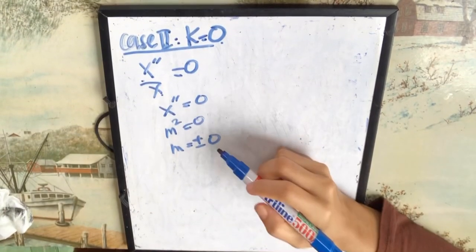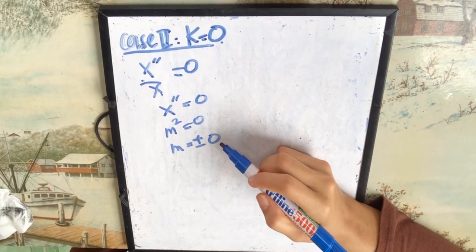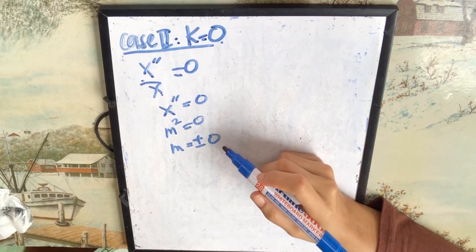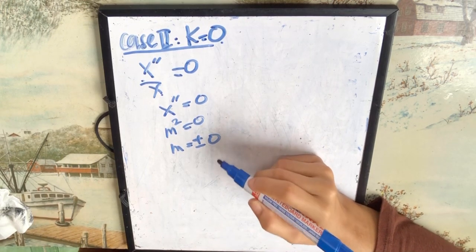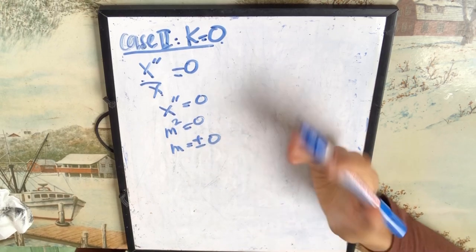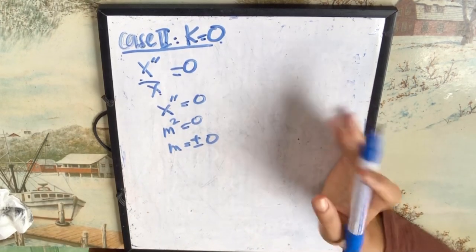Okay, so therefore, this is real and repeated. x is real and repeated because plus 0 is 0, negative 0 also 0. So it's real and repeated.